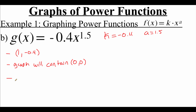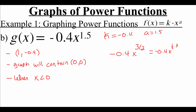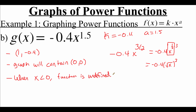To figure out what's going to happen when our x values are negative, this function needs a little rewriting. Looking at that 1.5 power, we can rewrite that as three halves, and then break it up as a one-half power multiplied by 3. Since a one-half power means the same thing as a square root, we can really write this as negative 0.4 times the square root of x cubed. When x values are negative, we can't evaluate negative numbers underneath a radical, so if our x values are negative, then this function is undefined. We can graph this on our calculator to confirm.